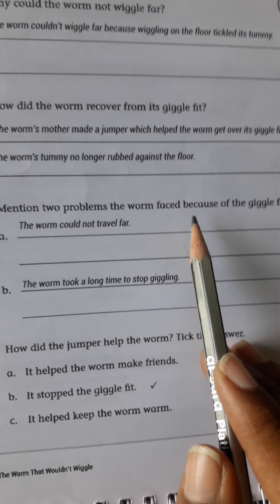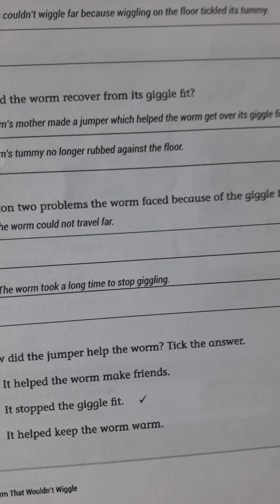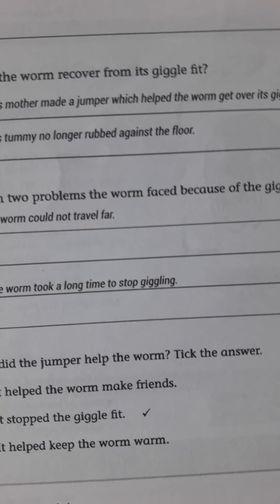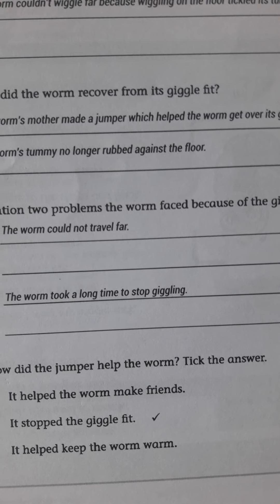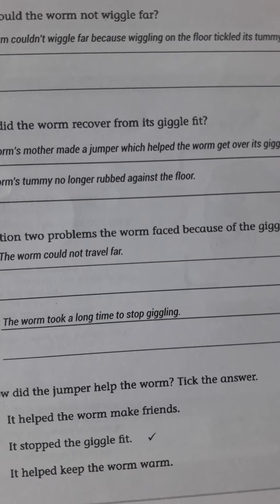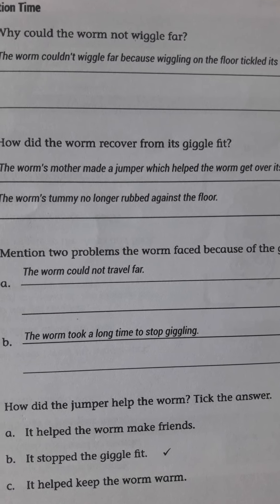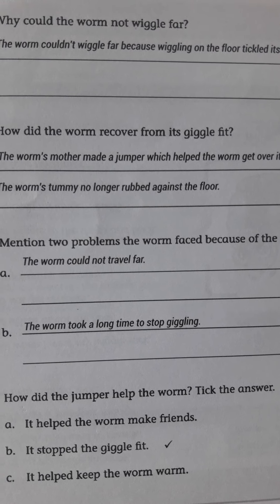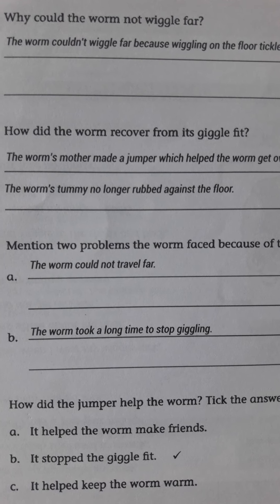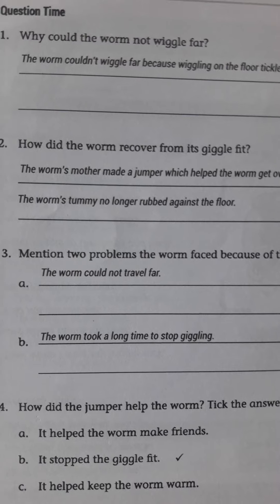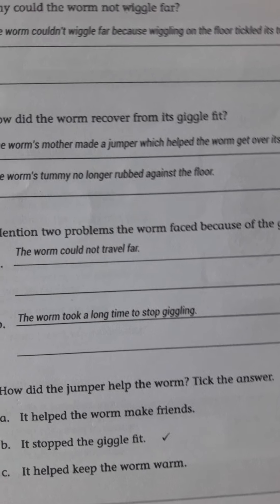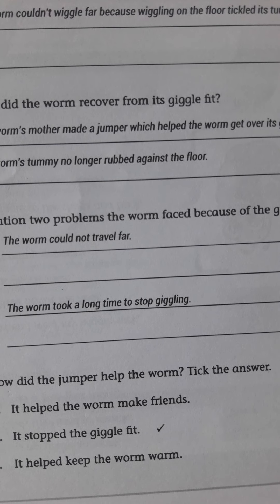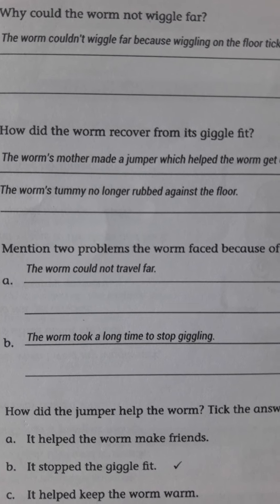Next question: Mention two problems the worm faced because of the giggle fit. When the worm was wiggling on the floor, because it was giggling, the worm could not travel far. And the worm took a long time to stop giggling. The worm was taking so much time to get out of that laughing and come to normal position. So it couldn't wiggle far, and also it took a long time to stop giggling.